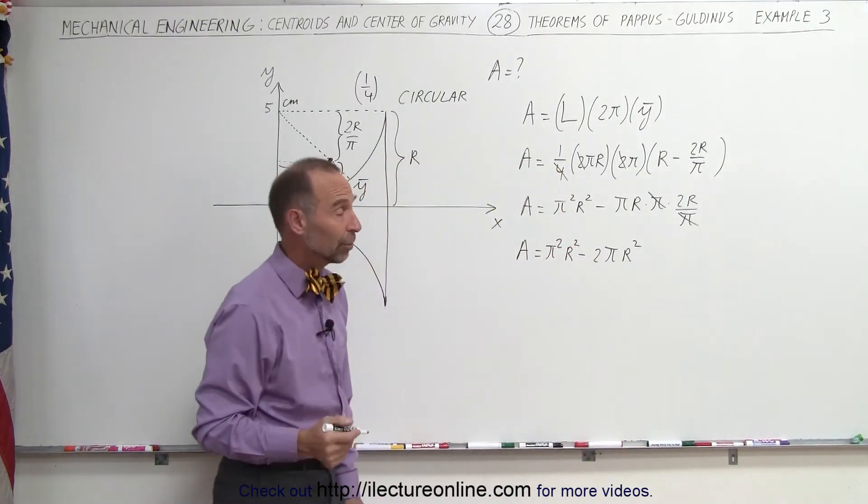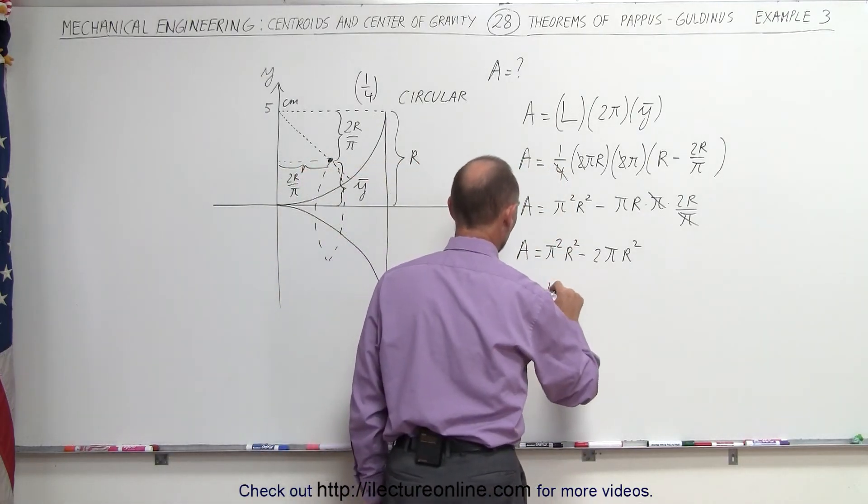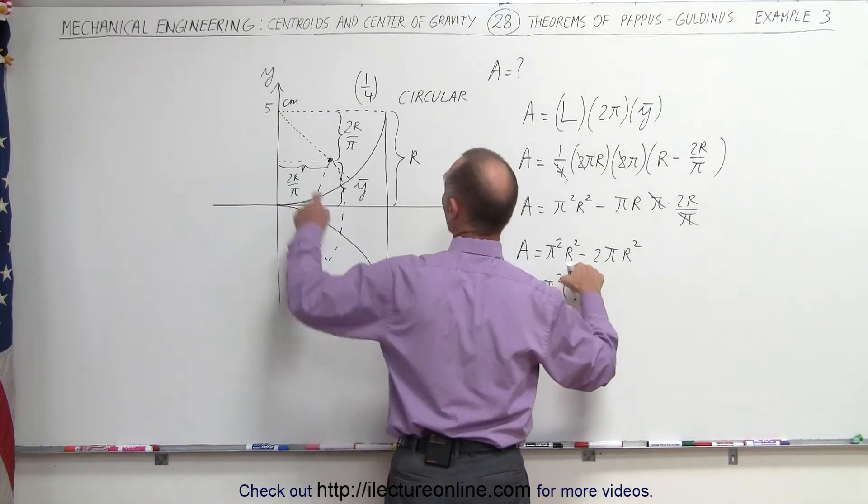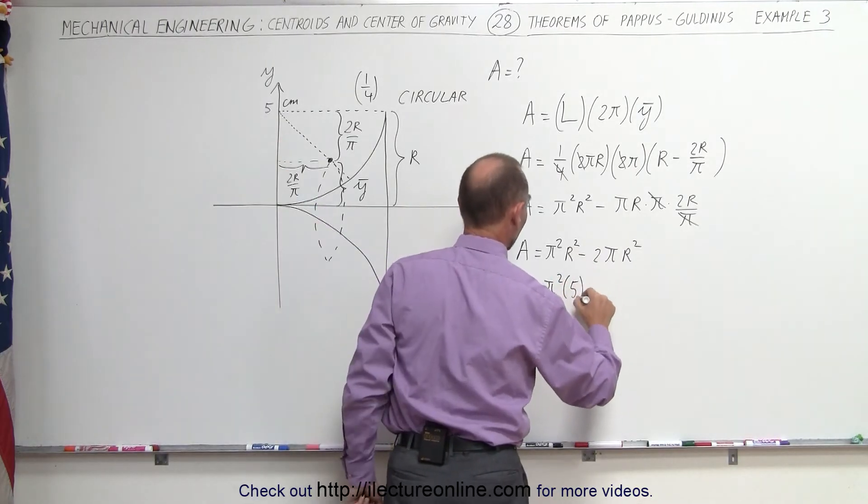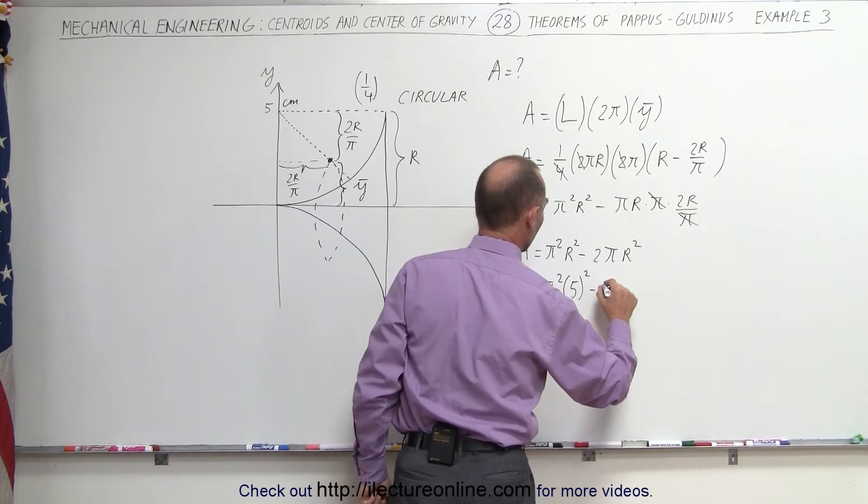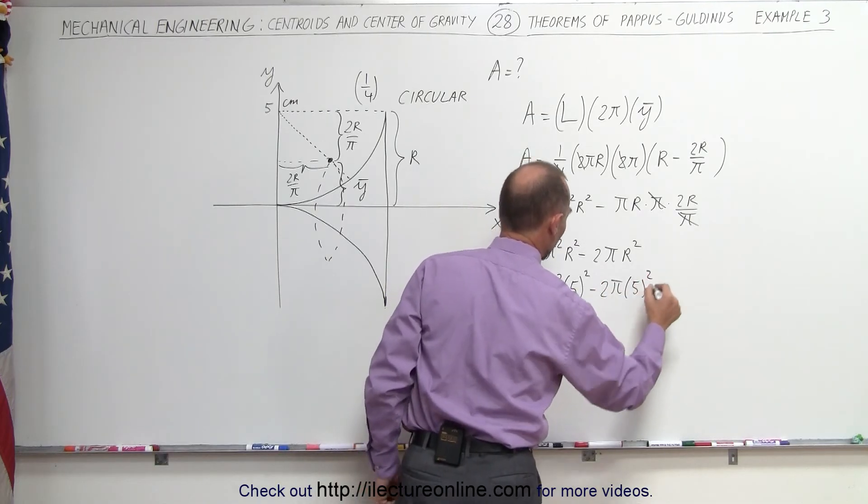Now all I have to do is plug in what these numbers are. So the area is equal to π². r was going to be 5 squared minus 2π times 5 squared.